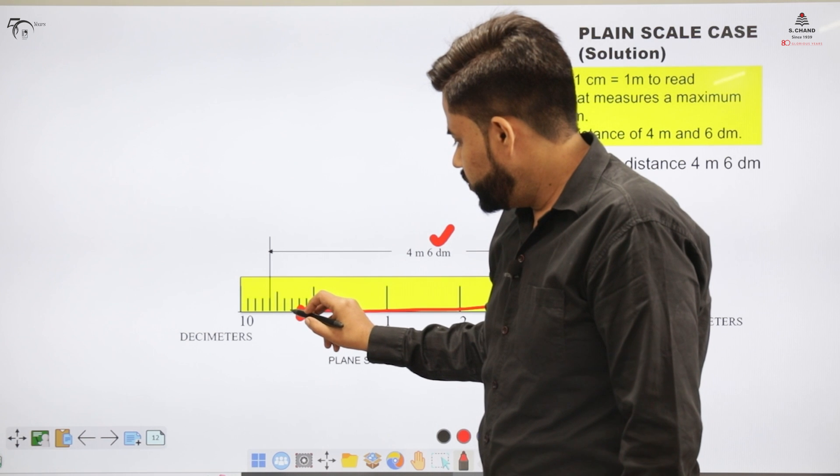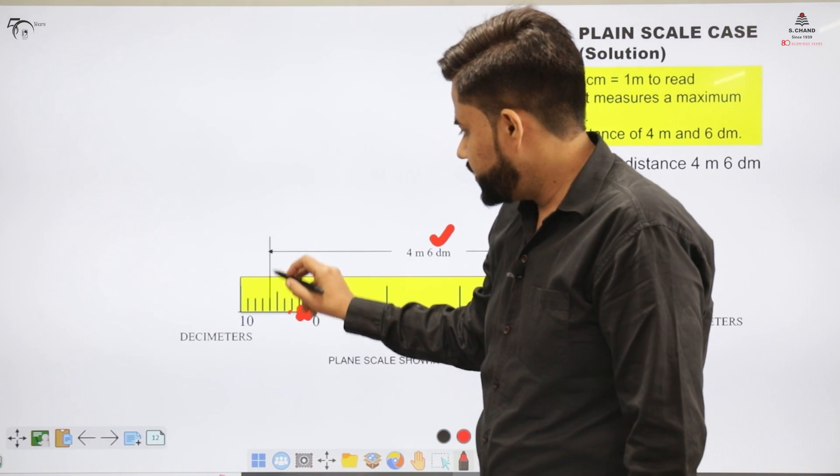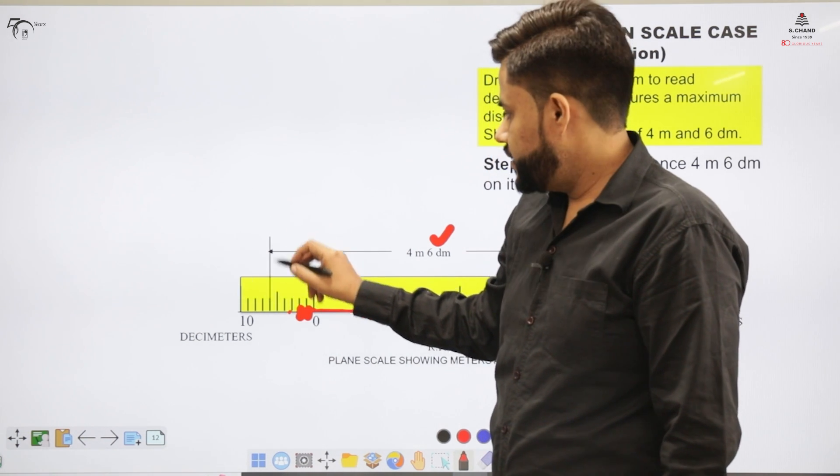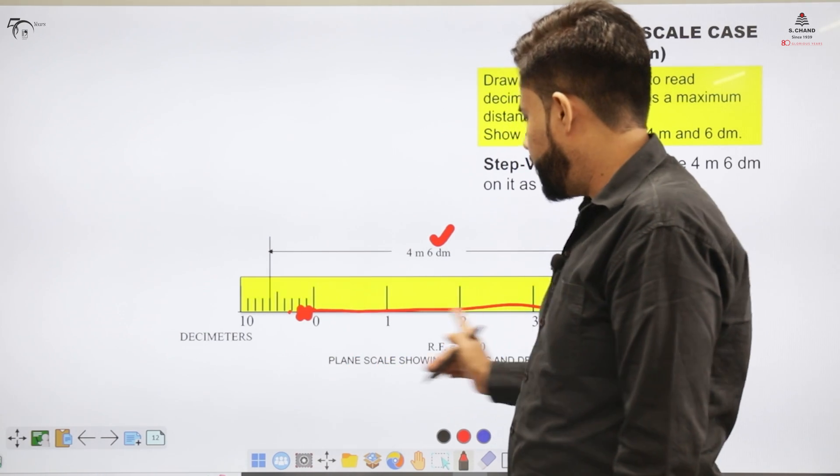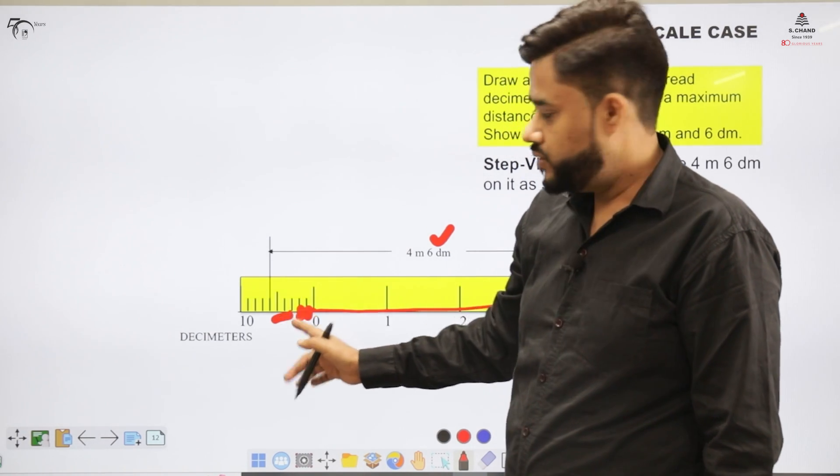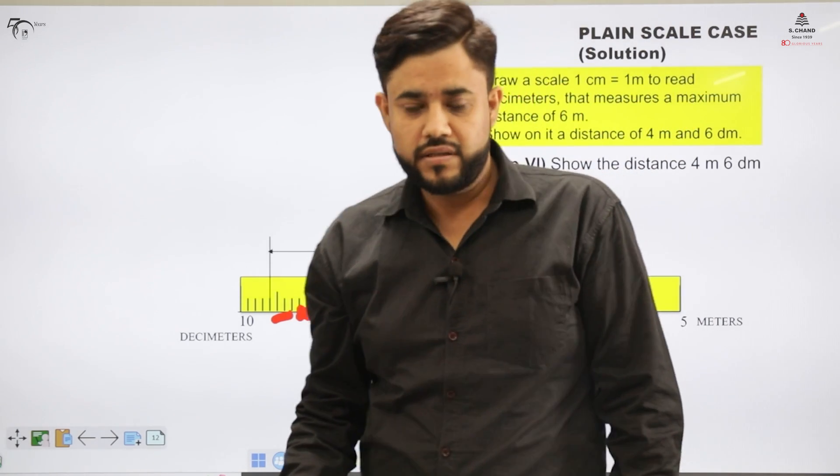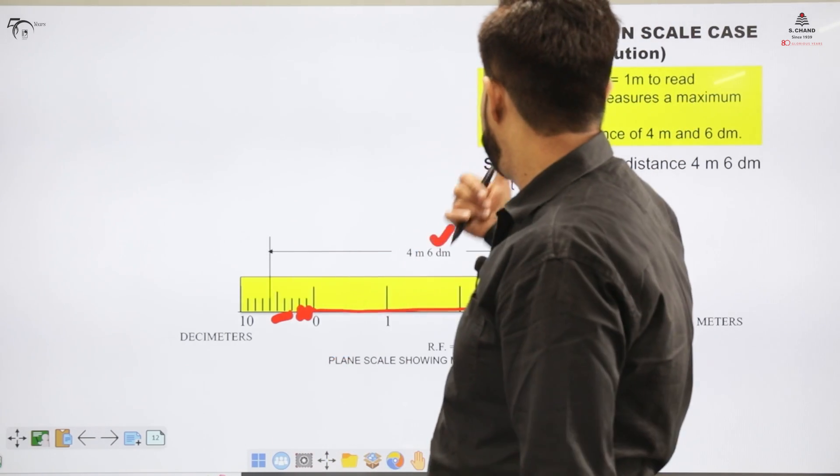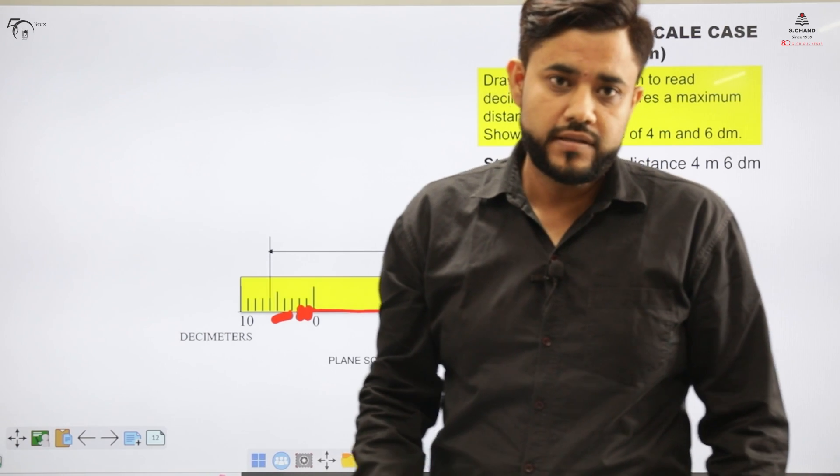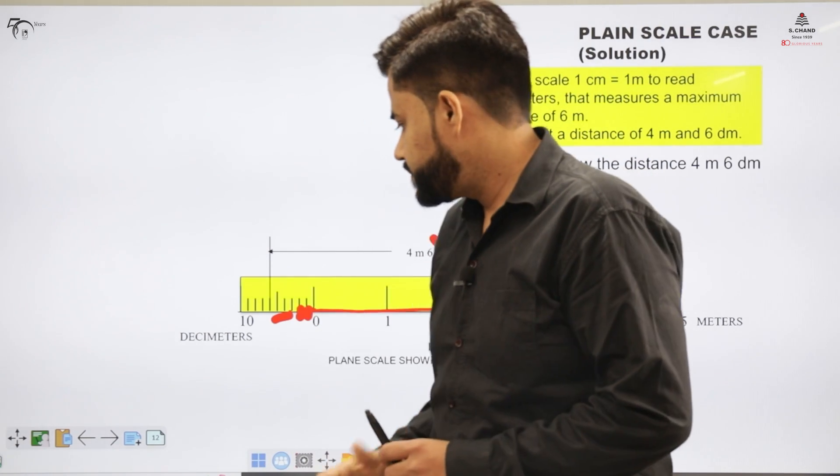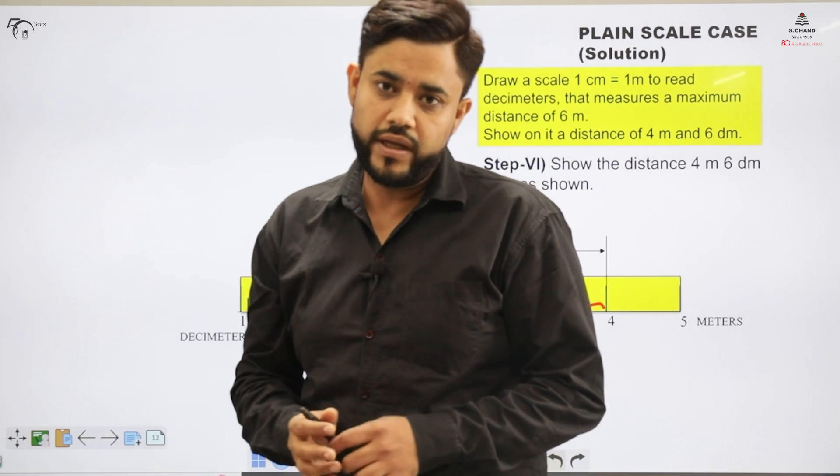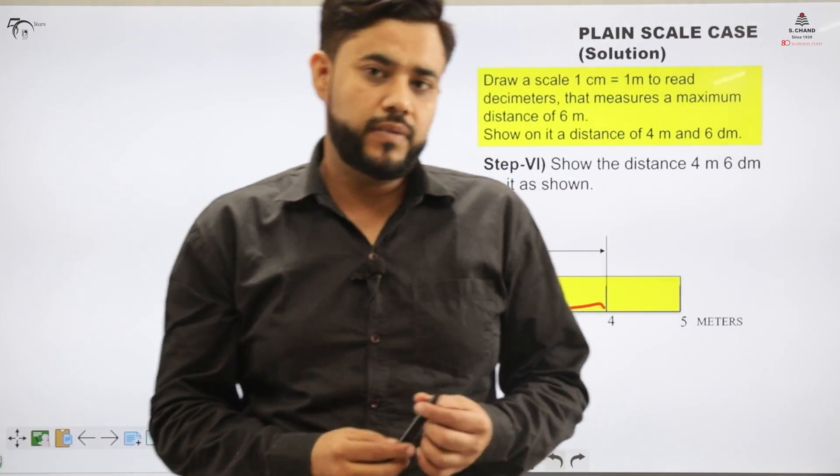So 1, 2, 3, 4, 5 and 6, this indicates the decimeter part. So 4 meter here and 6 decimeter on this side. So this overall indicates 4 meter 6 decimeters. So the large distance which is 1 meter is represented in centimeters that answers to the query which was there in the initial part of the video.